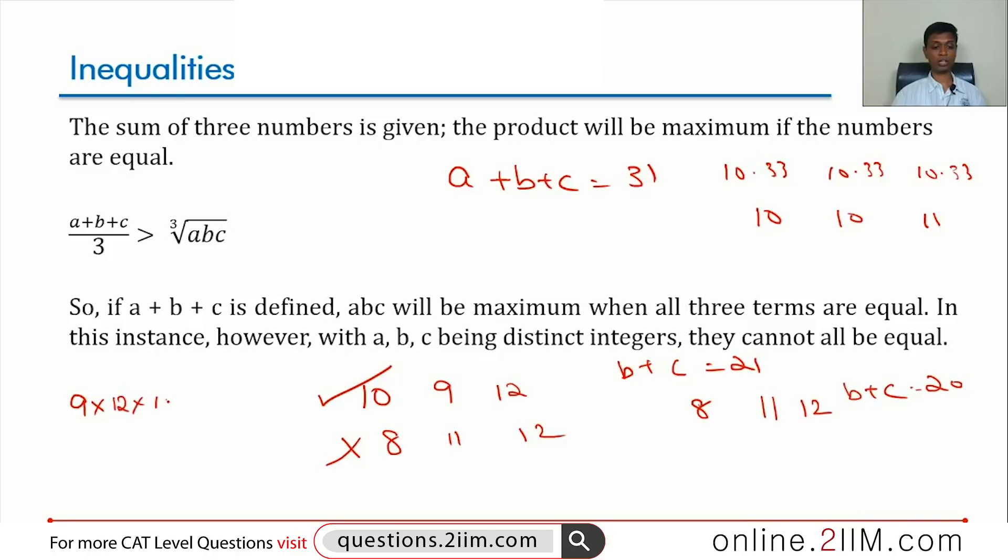That is probably the best case scenario where the numbers are as close to each other as possible. 9 into 12 into 10. 108 into 10, 1080. This final leg is just trial and error. Key thing, the sum is given, product has to be maximum. The numbers have to be as close to each other as possible.